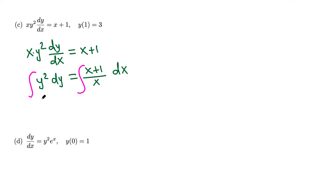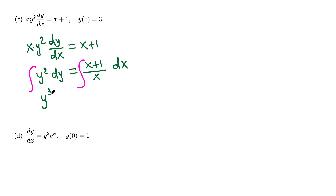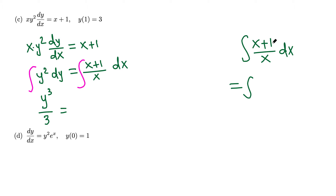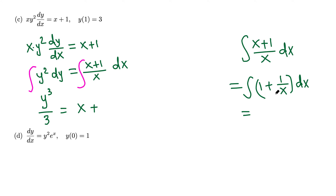Integrating the left side: y squared integrates to y cubed over 3. For the right side, there is no quotient rule — do not cancel. Instead, split the fraction: (x plus 1) over x equals x over x plus 1 over x, which equals 1 plus 1 over x. So the anti-derivative is x plus the natural log of x.